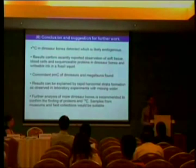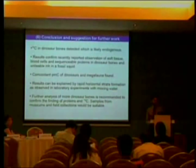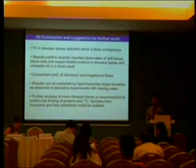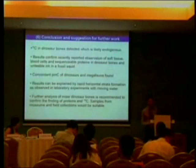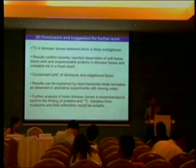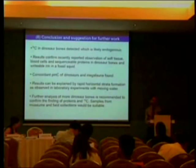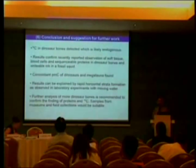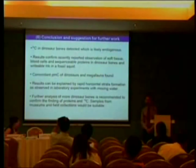In conclusion: the most important result is C-14 in dinosaur bones, and we are sure this is not coming from contaminants but is endogenous. The results confirm recently reported observations of soft tissue, blood cells, and sequenceable proteins in dinosaur bones, and writable ink in a fossil squid. Concordant PMC of dinosaurs and megafauna has been found, which has far-reaching consequences. The results can be explained by rapid horizontal strata formation as observed in laboratory experiments with moving water, where multiple strata form at one time with material sorting out. Further analysis of more dinosaur bones is recommended to confirm the findings of proteins and C-14. Samples from museums and field collections would be suitable. Thank you.